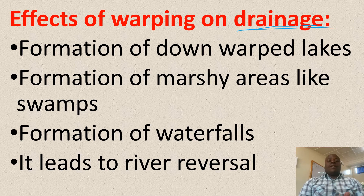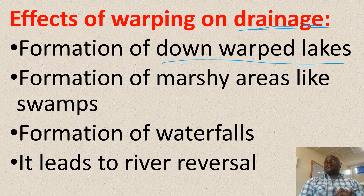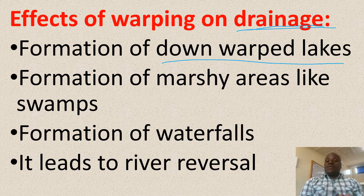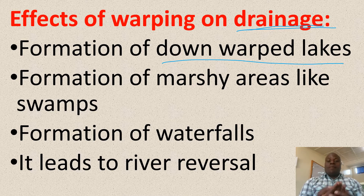Number one, warping leads to the formation of down-warped lakes. For example, if there is down-warping and a U-shaped depression or basin is formed, once this depression or basin is filled with water, it forms a basin lake, like Lake Victoria, Muhazi, Chad, etc.